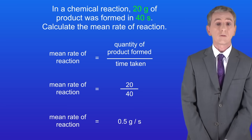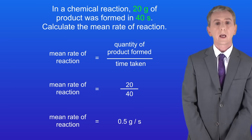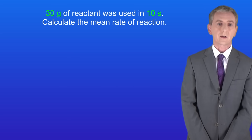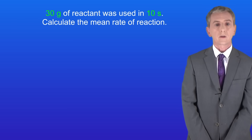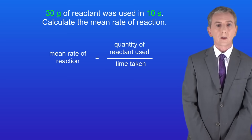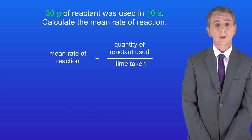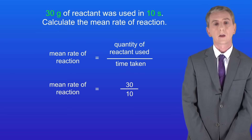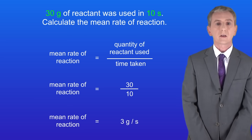We can also calculate the mean rate of reaction from the quantity of reactant used. Here's a sample question: 30 grams of reactant was used in 10 seconds — calculate the mean rate of reaction. The mean rate of reaction is the quantity of reactant used divided by the time taken. The quantity of reactant used is 30 grams and the time taken is 10 seconds. Dividing 30 by 10 gives us a mean rate of reaction of 3 grams per second.